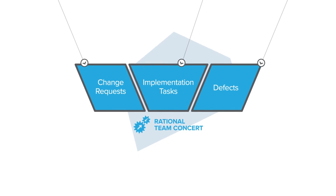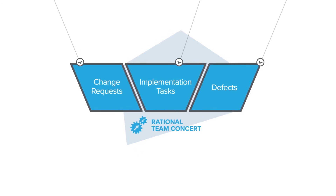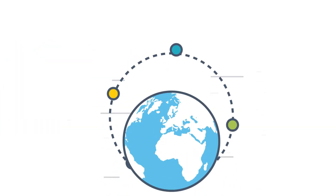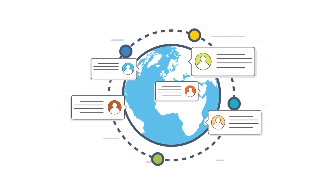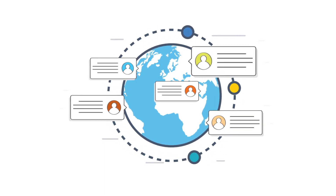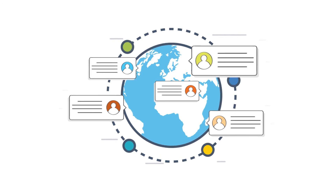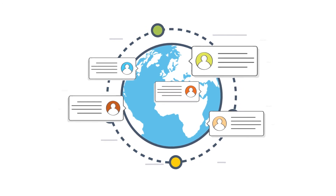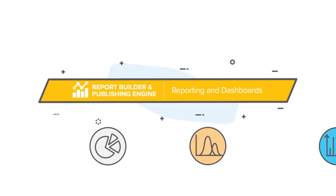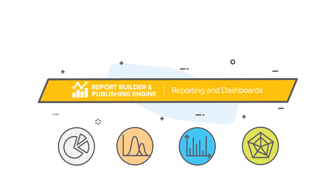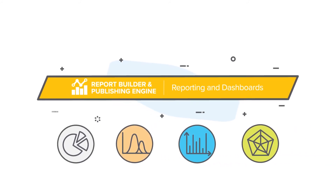Development leads will follow links to features in Rational Team Concert, which is where development is tracked and planned. Remote and offshore team members provide input to discussion threads, and stakeholders can review and approve the changes using Rational Team Concert's collaboration features. Meanwhile, IBM's Report Builder and Publishing Engine produce up-to-the-minute data visualizations for project dashboards and reports.